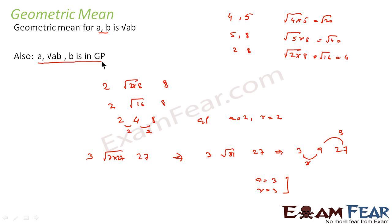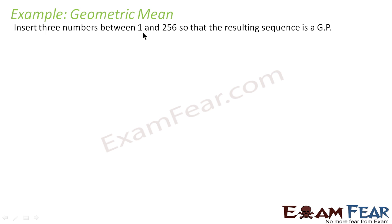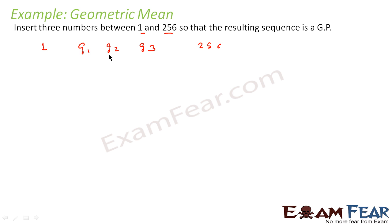We'll take one example of geometric mean. We are told to insert three numbers between 1 and 256 so that the resultant sequence is a GP. We have 1 and 256, and we have to insert three numbers — let these be G1, G2, and G3 — such that 1, G1, G2, G3, 256 are in GP. The best form of a geometric progression is a, ar, ar², ar³. So I'll write G1 as ar, G2 as ar², G3 as ar³, and the last term is 256.